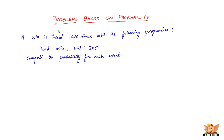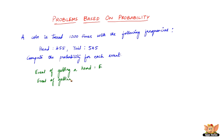Since the coin is tossed 1000 times, the total number of trials is 1000. Let us call the event of getting a head as E and the event of getting a tail as F, because there are two events happening here — getting a head is one event and getting a tail is another.